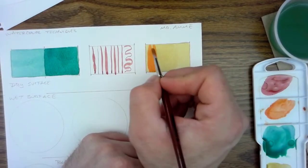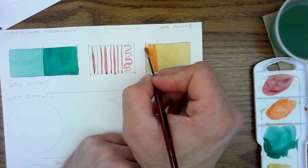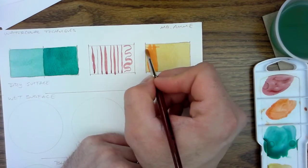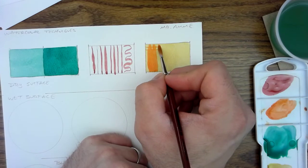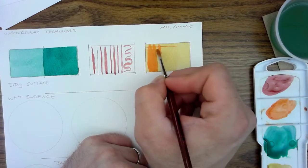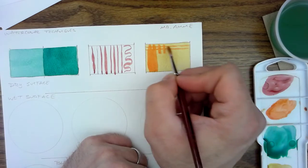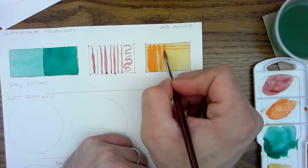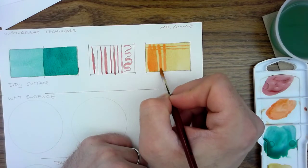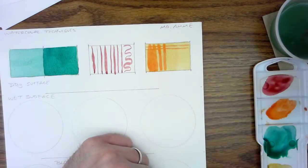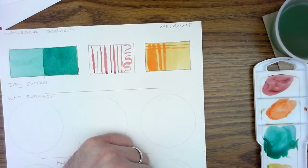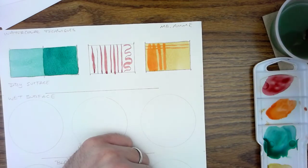So let's say I was trying to create some type of pattern. I could develop patterns using this technique of glazing. Or I could create rough textures.